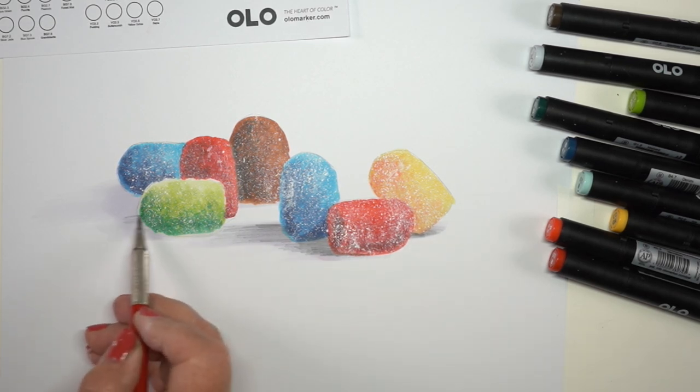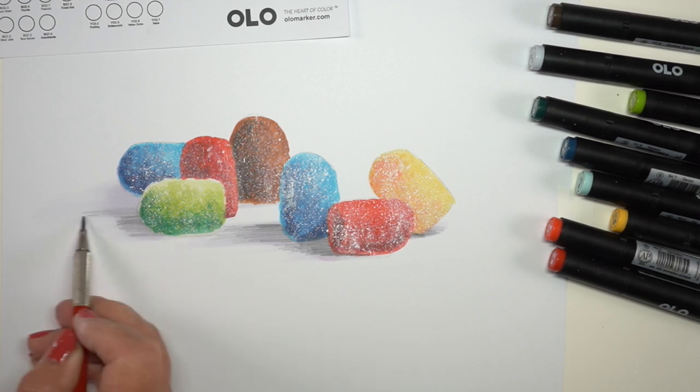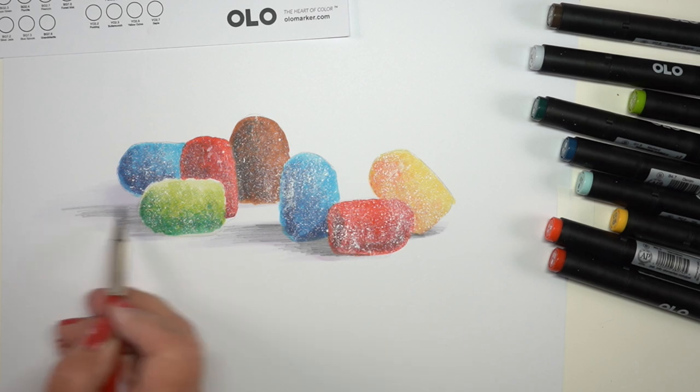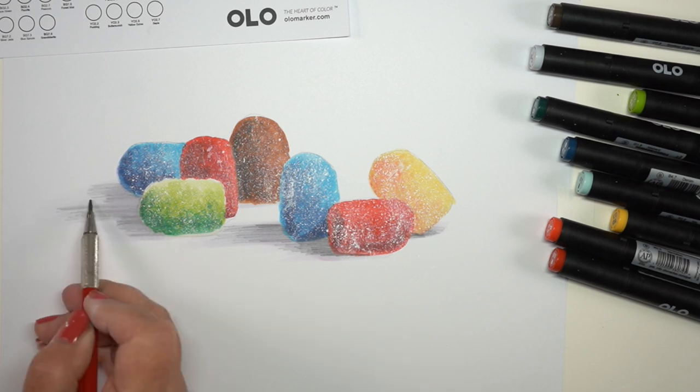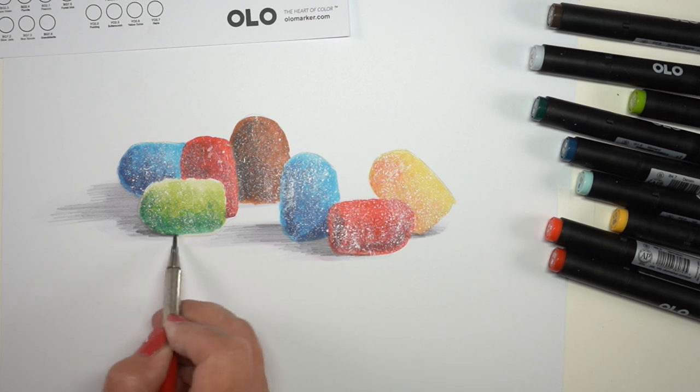Since I didn't have a darker marker in this Olo set, I decided I would just use a graphite pencil to darken my shadows a bit. But look how sweet those gumdrops look. Are they not the cutest little thing? And two of those on a tag would be amazing and super easy. Whatever alcohol markers you have, you could do them in watercolor, you can do them in anything, and just put sugar on top of them.